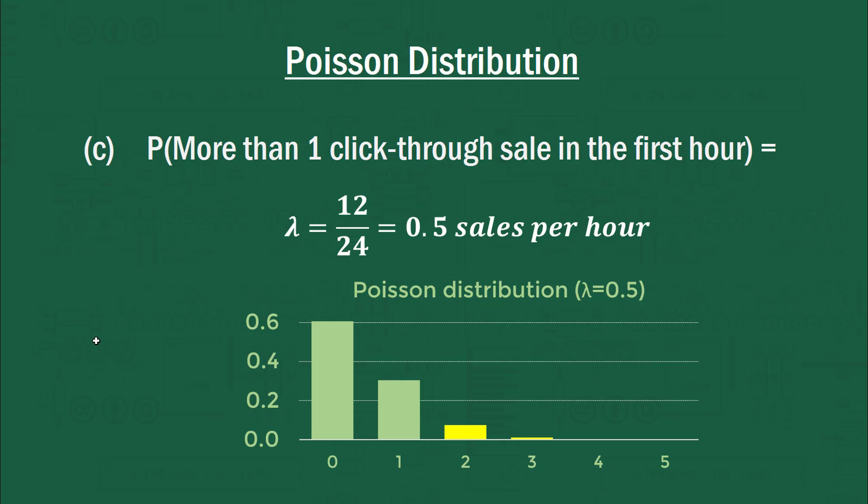So this is the distribution now where we've got a lambda value of 0.5. So most of the distribution is going to be down here at 0 and 1 because we're only expecting 0.5 sales per hour. So we're most likely to get 0 sales in a given hour. Potentially, we can get 1. And then it becomes less likely to get 2, 3, and very unlikely to get 4, 5, and 6 and beyond. So really, we're after this shaded yellow region, which will include all of those values from 2 and beyond.